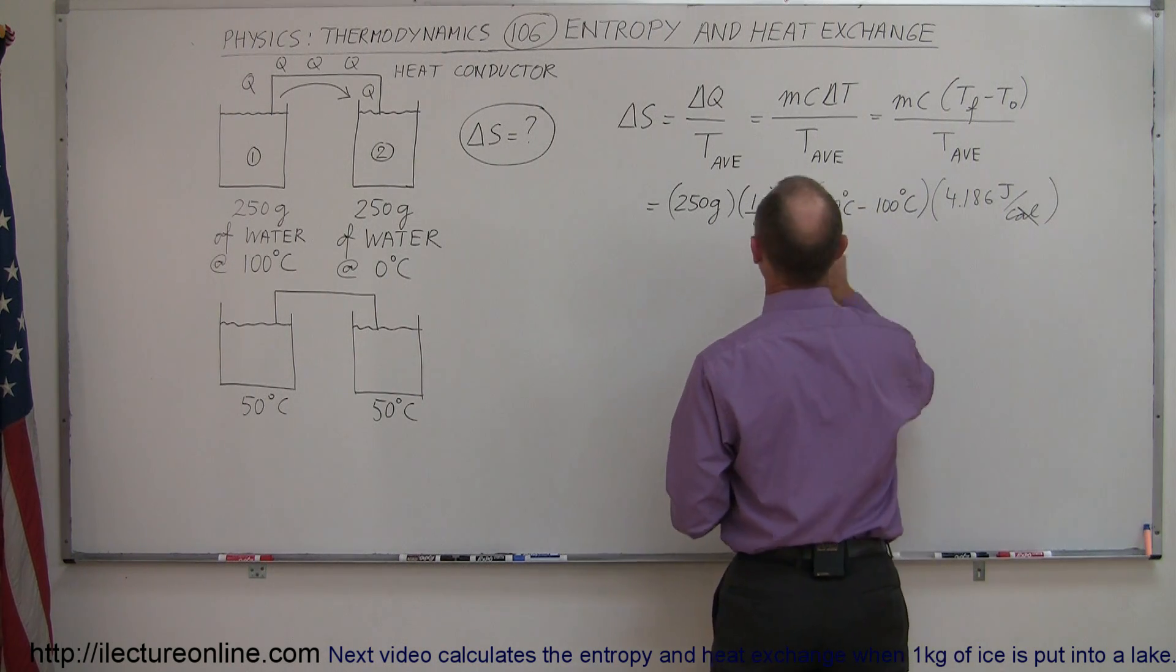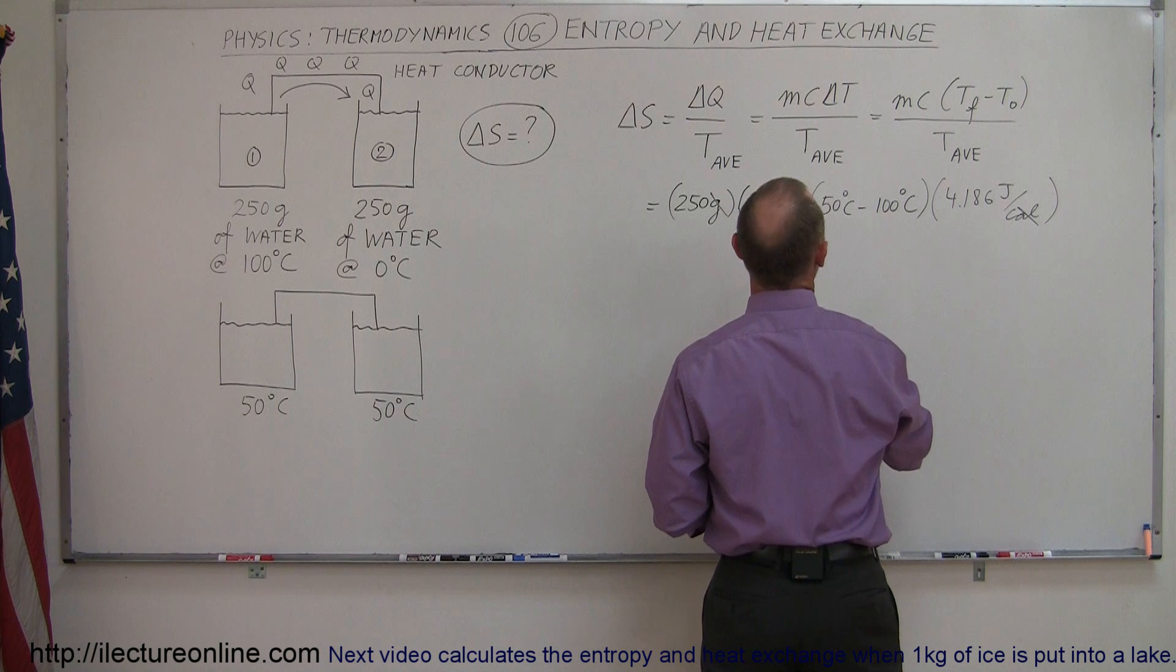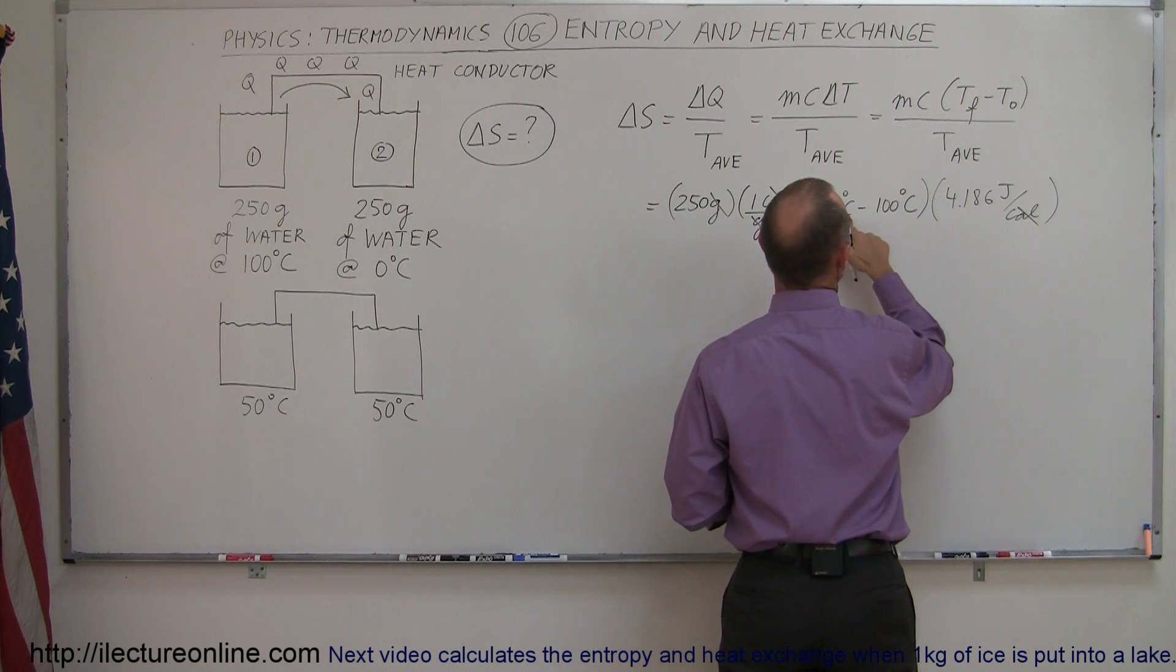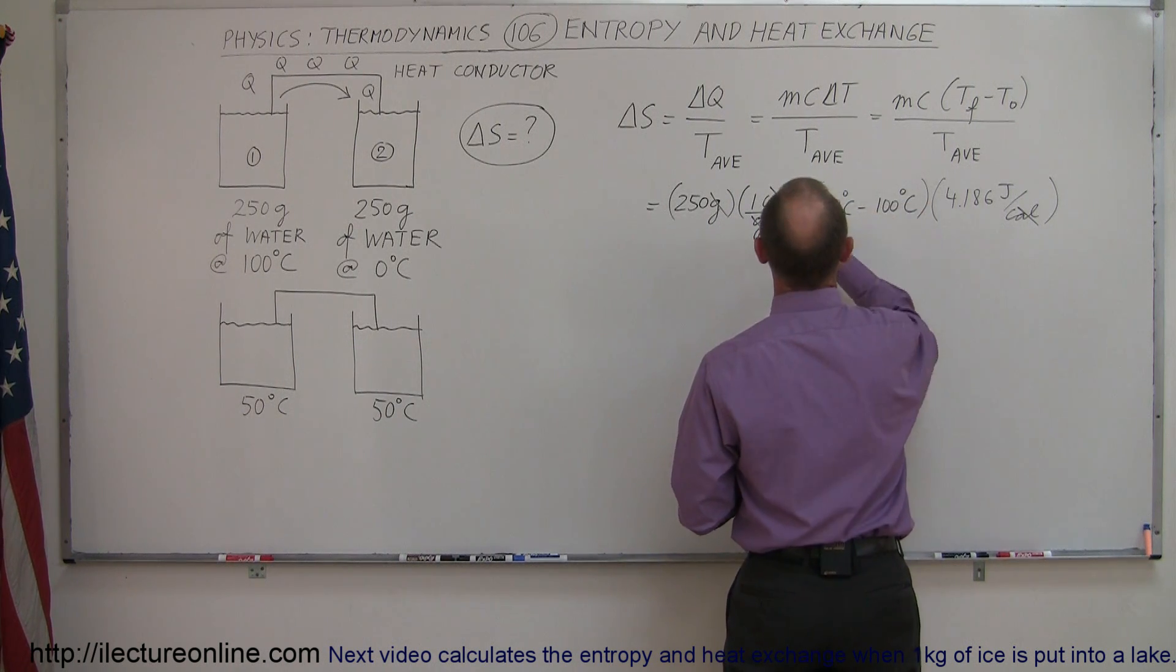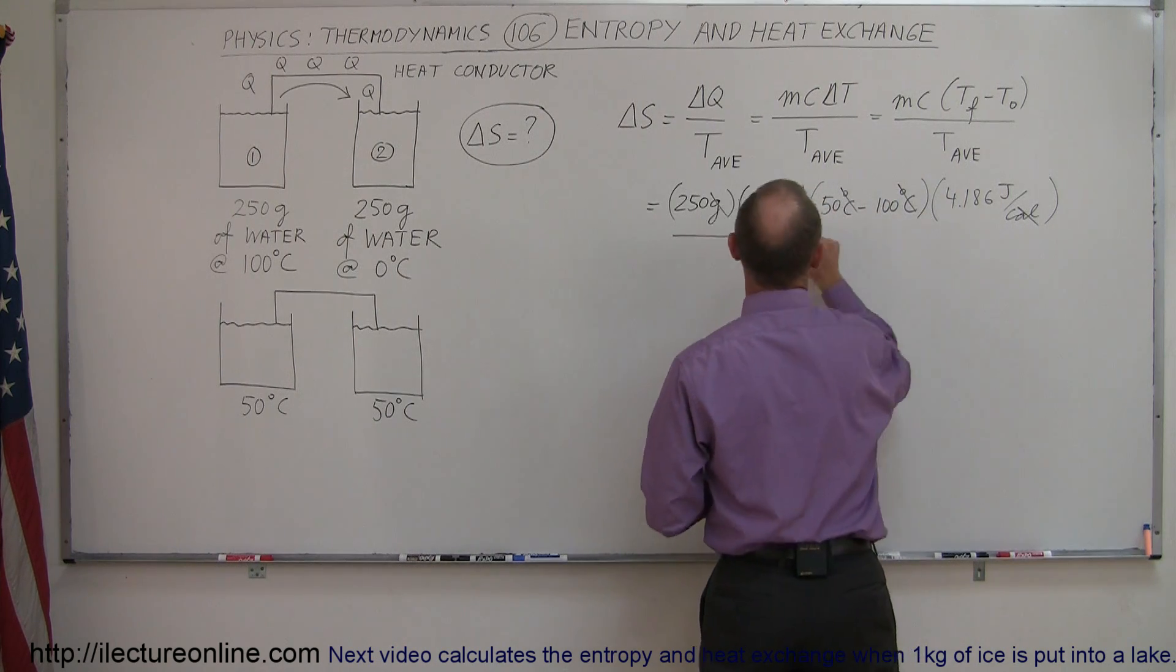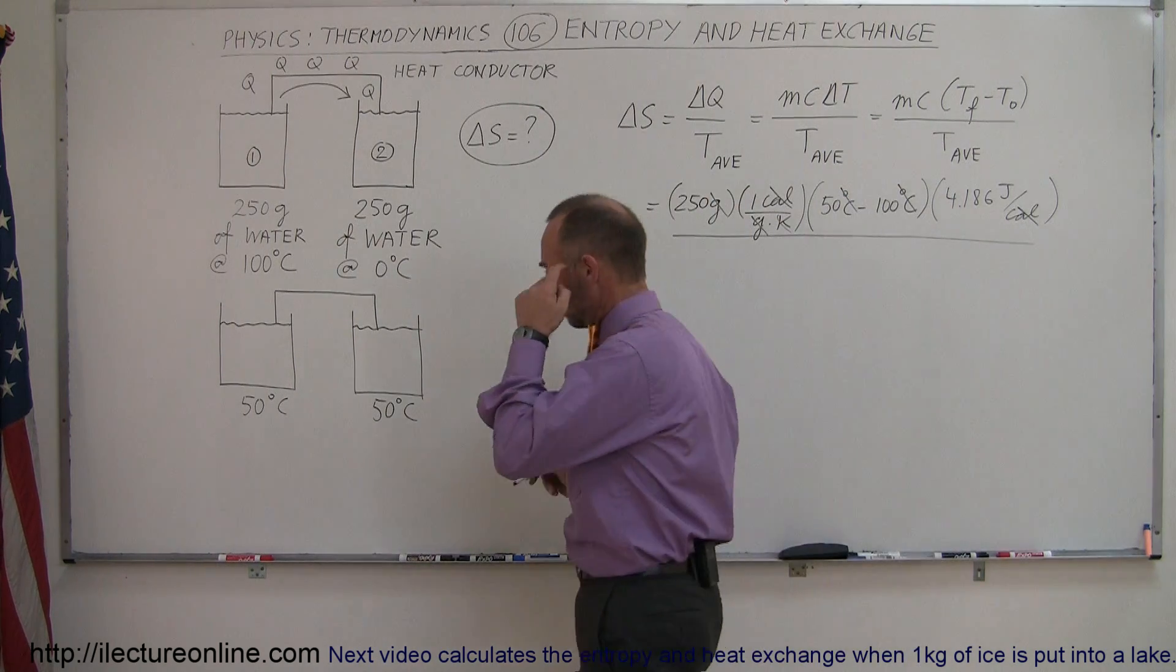So now, we can see that calories disappear, grams disappear, so we don't have to worry about that. And then we have centigrade degrees and Kelvin degrees, so that cancels as well. We still have to divide that by the average temperature.